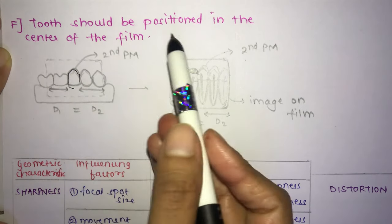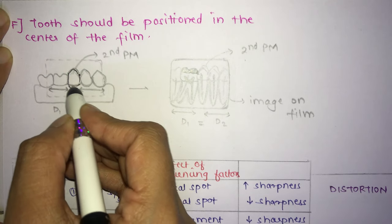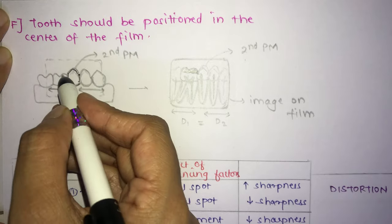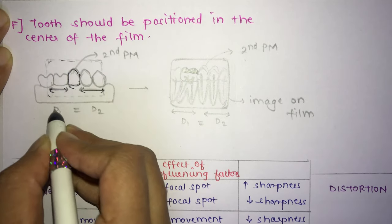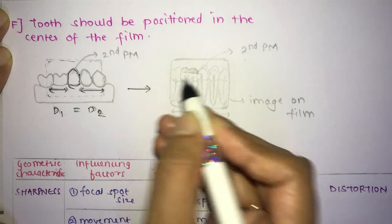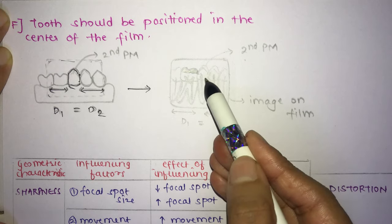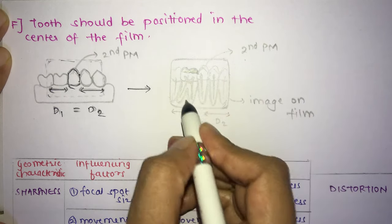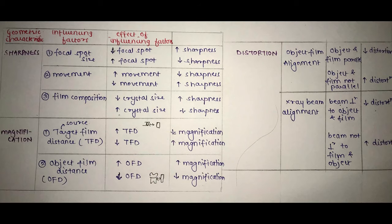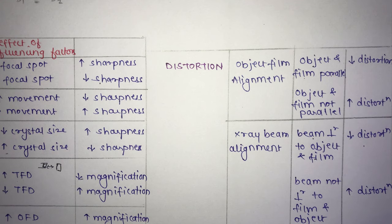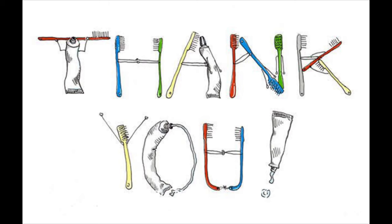The last principle is that the tooth should be positioned in the center of the film. For example, if the second molar is the tooth in question, the film should be positioned so that the distance on either side is equal — d1 equals d2 — ensuring a good radiographic image. This concludes all the principles of projection geometry, which are applied in the bisecting angle technique and the paralleling technique, to be explained in detail in further videos.